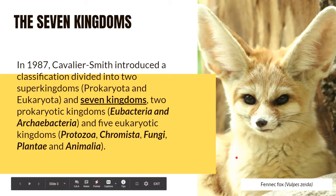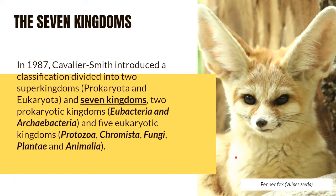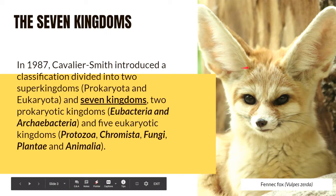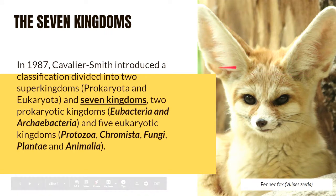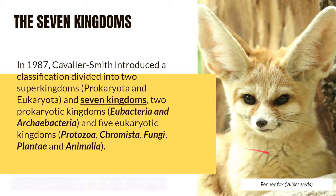This is one of my favorite mammals, and they are known as the smallest species of foxes. As you can see, they have these large bat-like ears, which is actually an adaptation that allows them to cool off in a very hot desert biome.